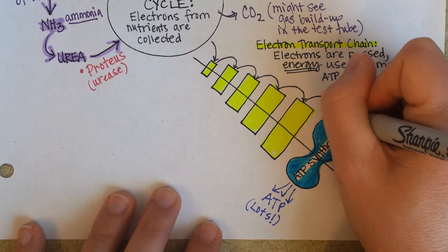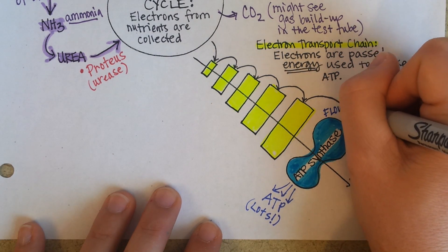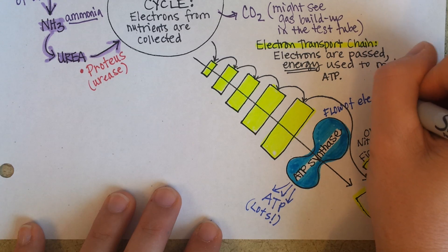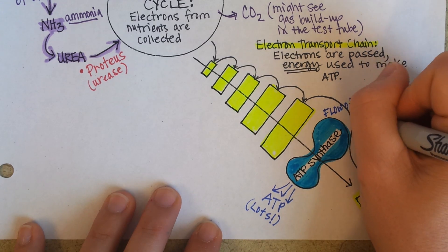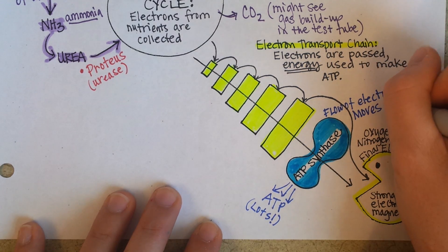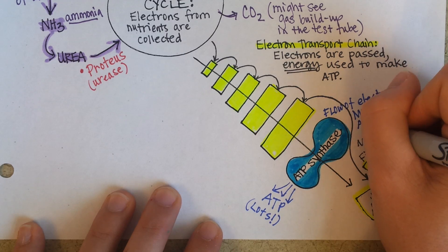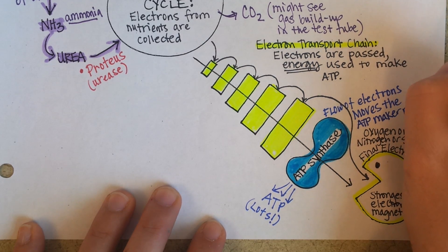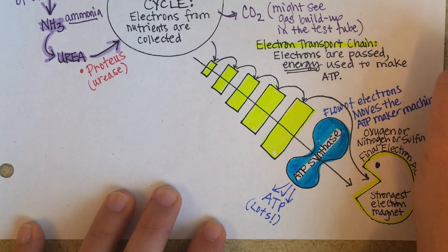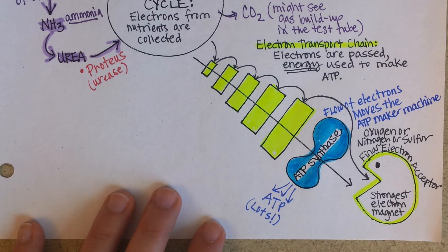So the flow of electrons moves the ATP maker machine, ATP synthase.